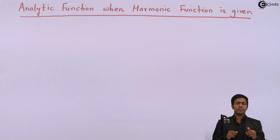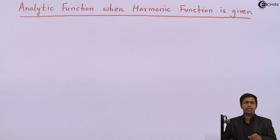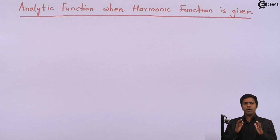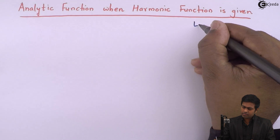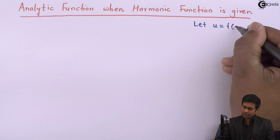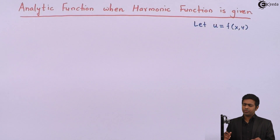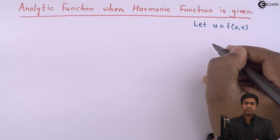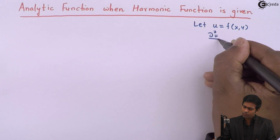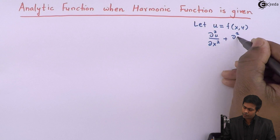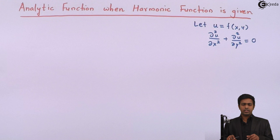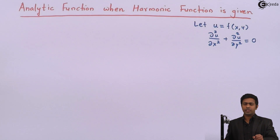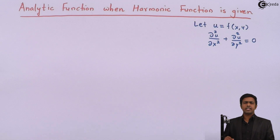To understand this concept, we should know the relationship between harmonic function and analytic function. If a function u of x and y satisfies the Laplace equation — that is, ∂²u/∂x² + ∂²u/∂y² = 0 — then we call this the Laplace equation in Cartesian coordinates. If u satisfies this equation, we say u is a harmonic function.